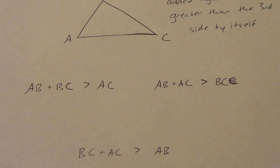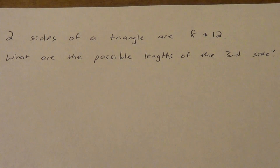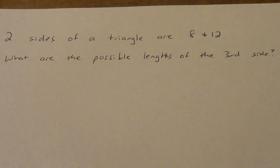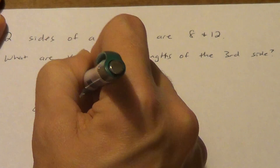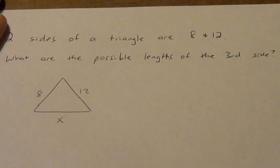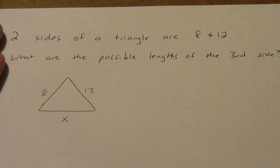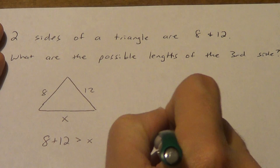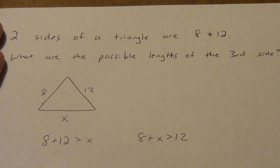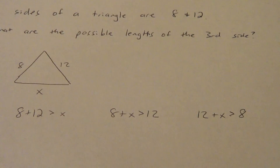How we usually use this involves a couple of algebra things. So: two sides of a triangle are 8 and 12 — what are the possible lengths of the third side? I've got an 8, a 12, and an X. Let's think through all three possibilities. I could add 8 and 12 together, and they have to be more than X. Or I could add 8 and X together, and they have to be more than 12. Or I could add 12 and X together, and they have to be more than 8.